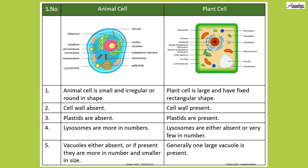Fourth point: in animal cell, lysosomes are more in number, while in plant cell, lysosomes are either absent or very few in number. And fifth point: vacuoles are either absent or, if present, they are more in number and small in size in animal cells, while generally one large vacuole is present in plant cell.